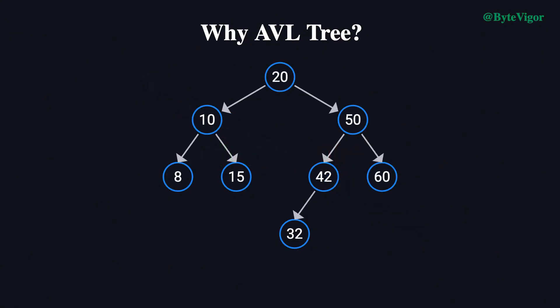To solve this problem, the AVL tree was introduced. By enforcing strict balancing rules, an AVL tree ensures that regardless of the order of node insertions or deletions, the tree's height remains balanced within a reasonable range. This balance guarantees consistently efficient performance for all key operations. At its core, an AVL tree is a binary search tree with one crucial additional property—self-balancing.